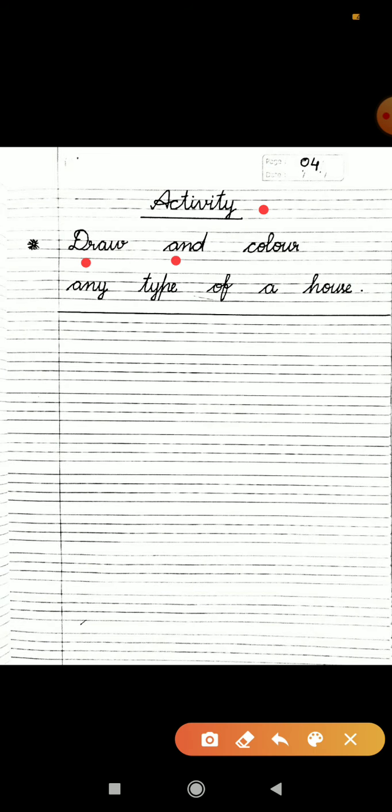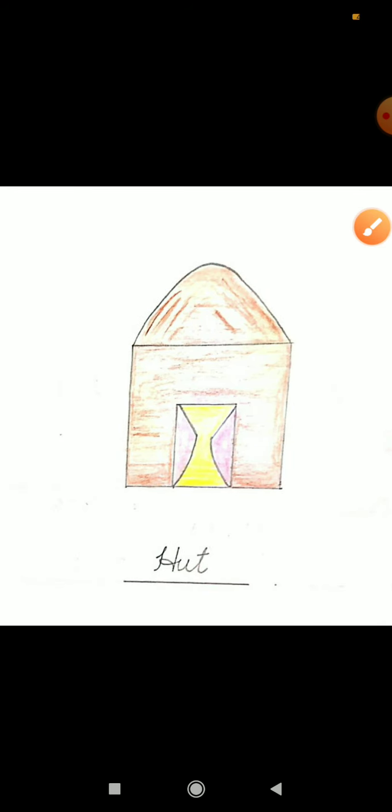After completing question number three, you will draw one line. Then you will start to write activity. Draw and color any type of house. Full stop. You will draw the activity in front of the question. Here, you will draw it nicely and color it.